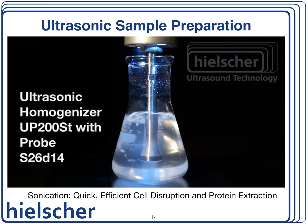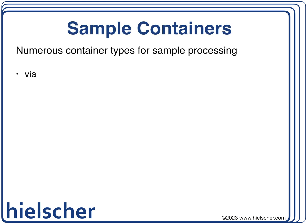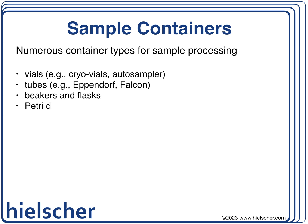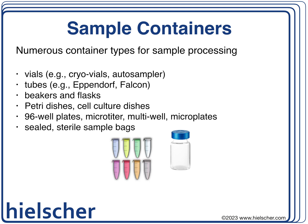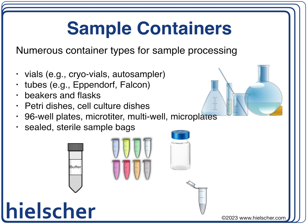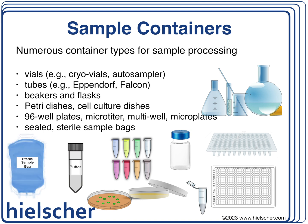In research and analysis labs, a variety of containers are used to hold samples. The choice of container depends on ensuring proper handling, analysis, and storage of the cellular material. Each container has specific properties like material, size, shape, and design that guide selection for each unique sample process. The characteristics of the sample material, such as cells and tissues, must also be considered when choosing the best preparation method.